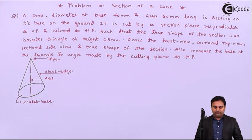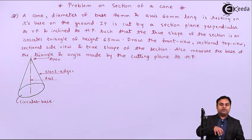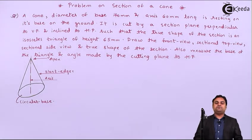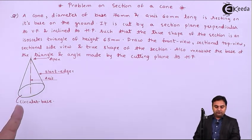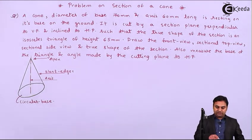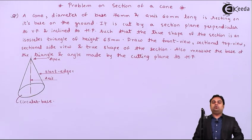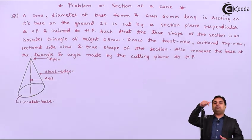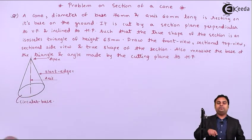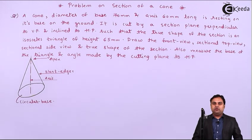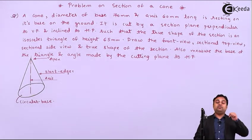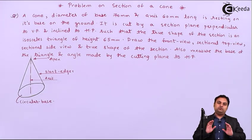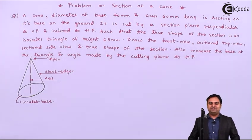When the cone is kept in HP, looking at it from the front we are going to see a triangle. When looking from the top we are going to see the circular base. So the circle of the cone will be visible in HP, that is in the top view, because the cone is kept in HP. Let us get started with this initial condition.